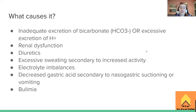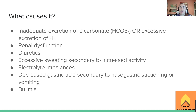What causes it? We have an inadequate excretion of bicarbonate ions (HCO3−), which makes the body more alkaline and basic, or it's an excessive excretion of hydrogen ions — getting rid of the things that make things acidic — so we go the other way toward basic. Essentially, all the basic, alkaline chemicals and ions stay in the body and all the acidic ones leave, making us more alkalotic.